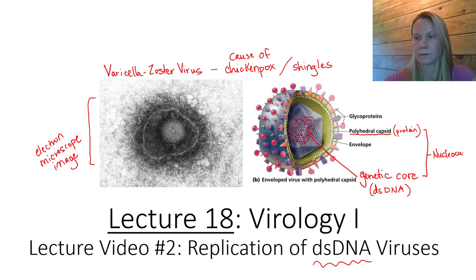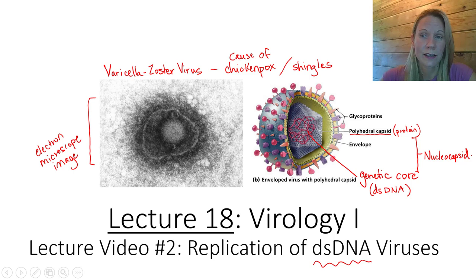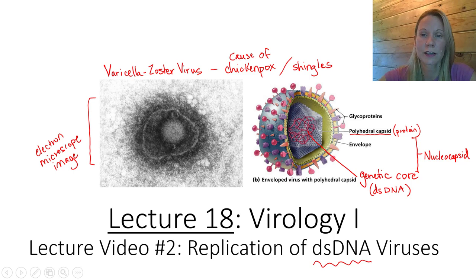All viruses are composed of at least a nucleocapsid — a genetic core that's DNA or RNA — and some shape to their capsid. We learned about the different shapes that can exist for the protein capsid, and this is a polyhedral, many-sided capsid. Now this virus is enveloped, so that means there is an additional protective layer around the nucleocapsid that we call the envelope.